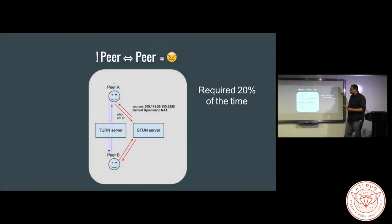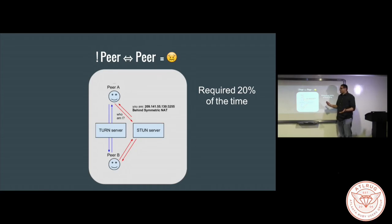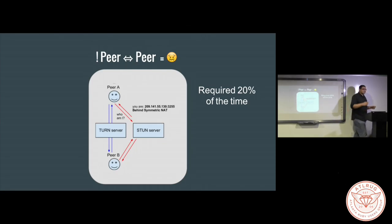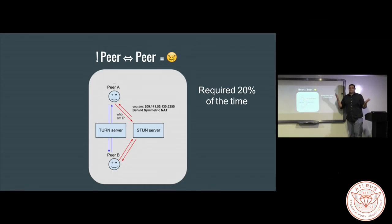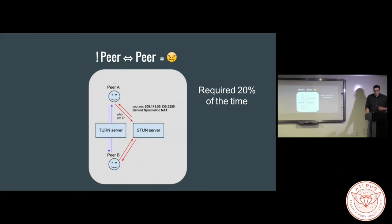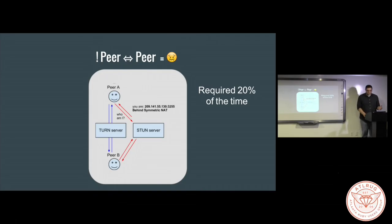Sometimes that doesn't quite work, and the main reason is there are network issues that prevent it. Usually when that's detected, we go to another server called a TURN server, and that's actually relaying video back and forth. That's also used in cases where you want one user to broadcast to a lot of users and still stay within the WebRTC framework. It turns out this happens about 20% of the time.